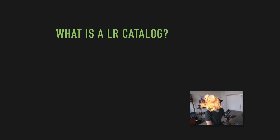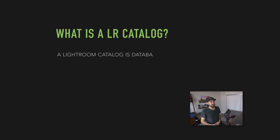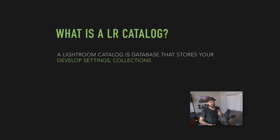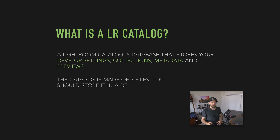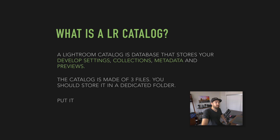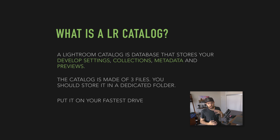So what is a Lightroom catalog? A Lightroom catalog is a database that stores your develop settings, your collections, your metadata, and your previews. So it's really made of three files. One is the catalog file, which is very important, and then the previews. I recommend putting your catalog on the fastest drive you can. It's going to be reading the previews from here, and you want this to be the quickest drive you have.